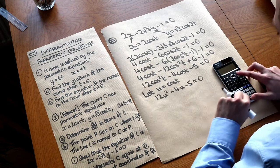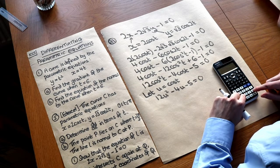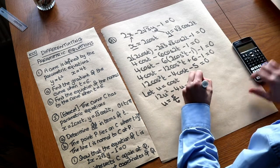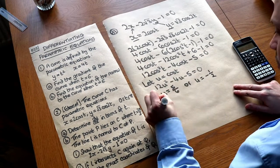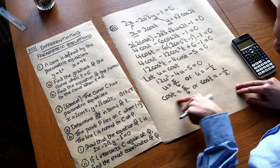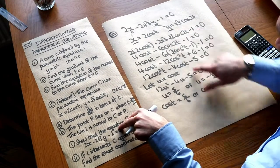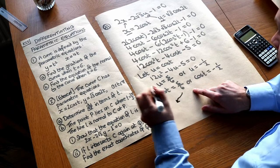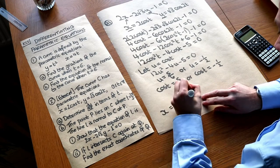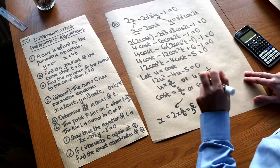Using the quadratic solver in the calculator — go to equations, solve a polynomial, degree 2, type in 12, minus 4, and minus 5 — gives solutions u equals 5 over 6 or u equals minus a half. Since u equals cos t, we have cos t equals 5 over 6 or cos t equals minus a half. For cos t equals 5 over 6, x equals 2 times 5 over 6, which is 5 over 3. For cos t equals minus a half, x equals 2 times minus a half, which is minus 1.